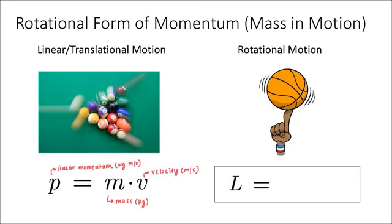In a very similar way, we can define the angular momentum of an object. We're going to represent that with a capital L as not m times v, but I, the moment of inertia, multiplied by omega, the angular velocity.